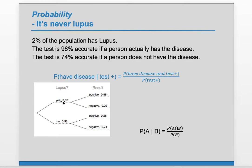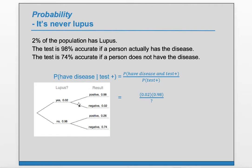For 'have disease and test positive,' it has to be on this branch and this branch, so that's going to be 0.02 times 0.98. For the denominator, we're going to have 'test positive,' but there are two ways to test positive — you could test positive this way or this way. So it's going to be yes-and-positive or no-and-positive: 0.02 times 0.98, plus 0.98 times 0.26. If we evaluate this, we get 0.0714.